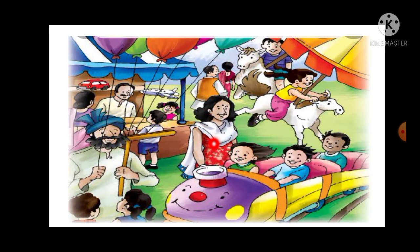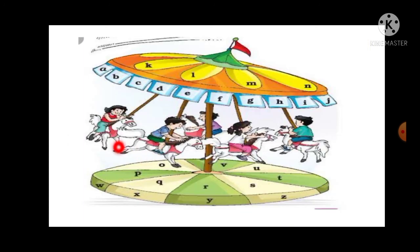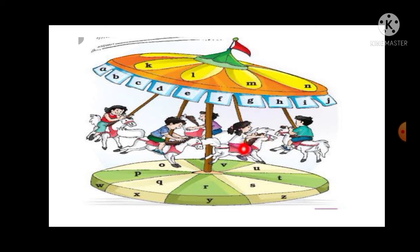Now students, look at page number 54. Here is the merry-go-round picture, and some letters are written on the merry-go-round. What we have to do here is circle those letters and read each word aloud. So students, circle these letters in your textbook.